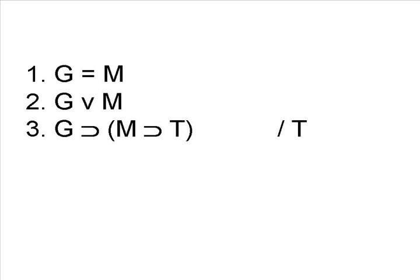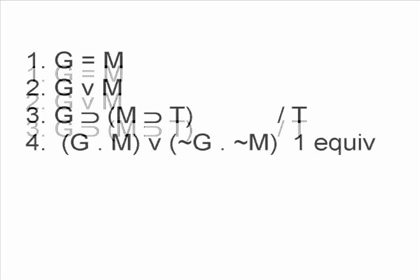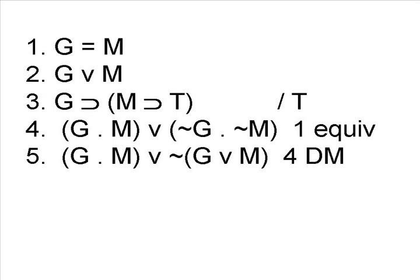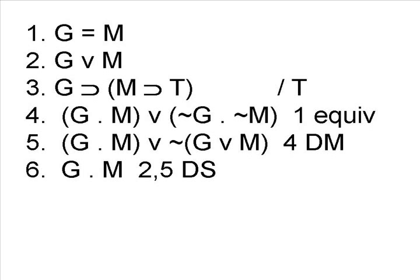The expression G implies M only if T can be turned into something by exportation — specifically, G and M implies T. That gives us a clue as to which proposition we want to turn line 1 into. By the rule of equivalence, we'll turn line 1 into either G and M, or not G and not M. Notice the second half can be changed by DeMorgan's rule — and remember, rules of replacement can be used on part of a line as well as the entire line. Having done this, we can see what line 2 is for: we use lines 2 and 5 in a disjunctive syllogism to get G and M by itself.